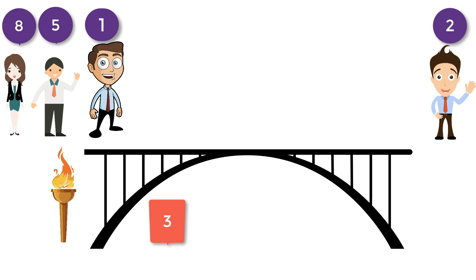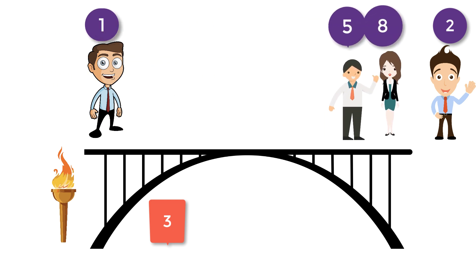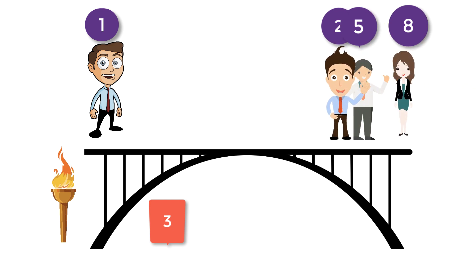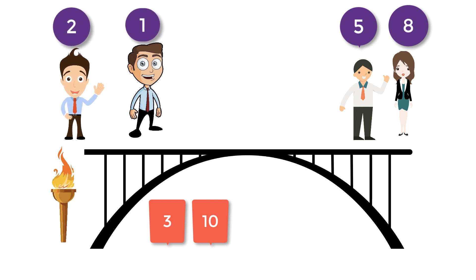At second step, 5 and 8 cross the bridge. 2 comes back. Time taken will be 8 plus 2, that is 10 minutes. Now 5, 1, and 8 are on the other side.